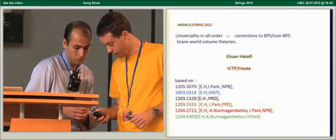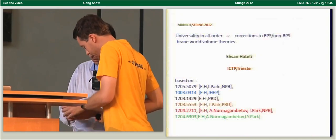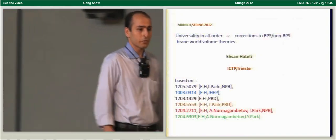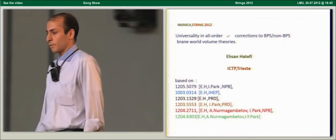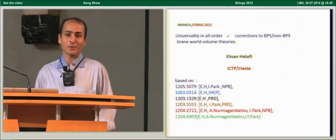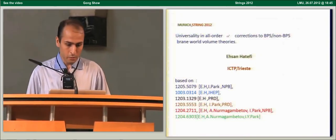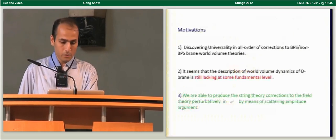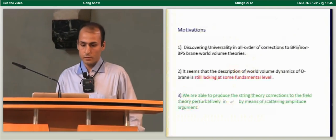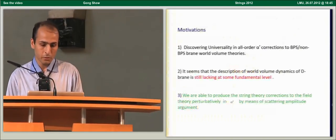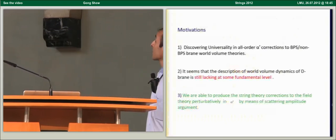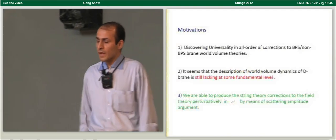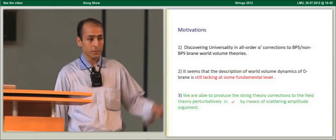The title of my talk is about universality in all-order alpha-prime corrections to BPS and non-BPS brane world volume theories. The first motivation is discovering universality for all orders of alpha-prime corrections. The second motivation is that the description of world volume dynamics of branes is still lacking at a fundamental level — we couldn't produce all contact terms appearing in superstring theory by usual pullback, so pullback may need modification. A third motivation is that if we can produce string theory corrections to field theory perturbatively in alpha-prime via scattering amplitude arguments, a more ambitious direction would be to make progress on the complete form of the non-Abelian DBI and tachyonic effective action.